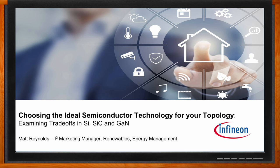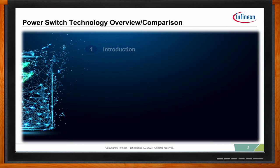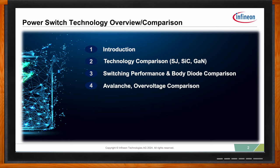We're talking about choosing the ideal semiconductor technology for your topology today. We'll be looking at silicon carbide, silicon junction products which have been around for many years, and of course GaN. We're in a unique situation where we've been working with silicon junction for many years, but there are two new wide bandgap technologies — GaN and silicon carbide — that are certainly disrupting the industry. We'll look at the attributes of all three and give some insight into where you might use one over the other.